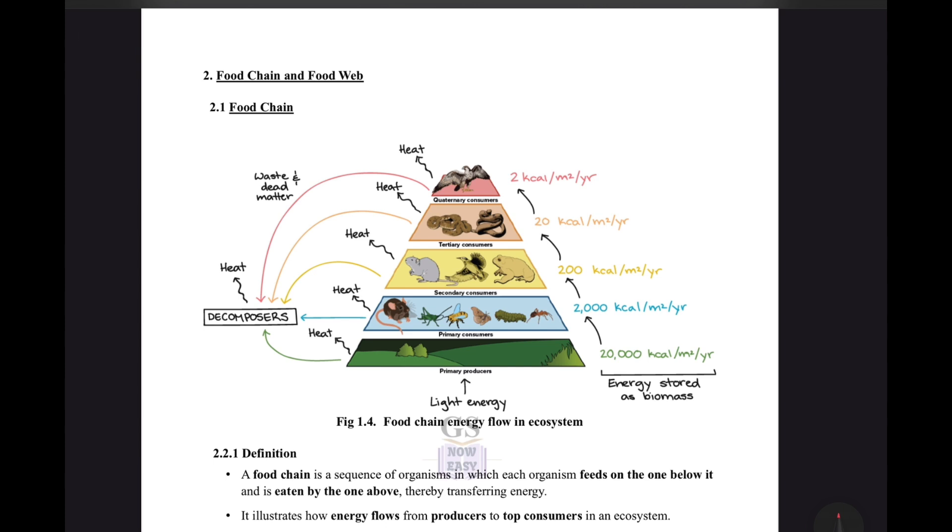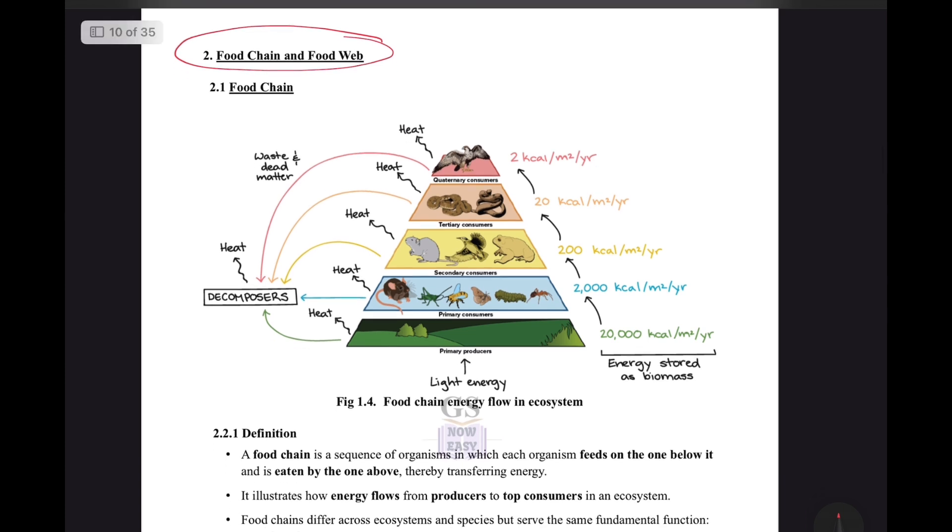Moving on with the next topic, we have number two: food chain and food web. This is a perfect topic keeping the examination point of view in our mind. An upward pyramid, figure 1.4, shows food chain energy in an ecosystem starting with light energy.